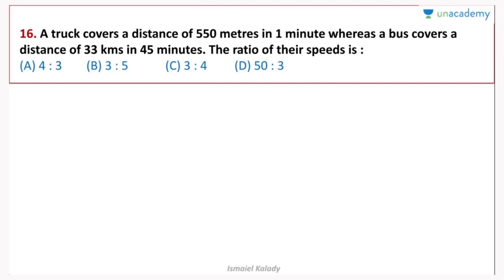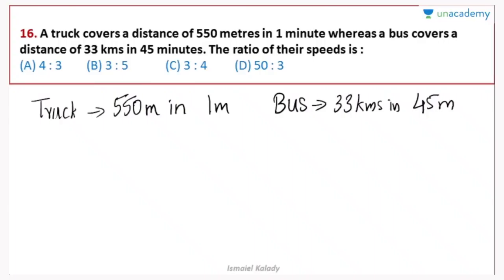We need to convert the units. The truck covers 550 meters in 1 minute. The bus covers 33 km in 45 minutes. Multiplying by 4/3 to convert 45 minutes to 60 minutes, we get the bus speed per hour.